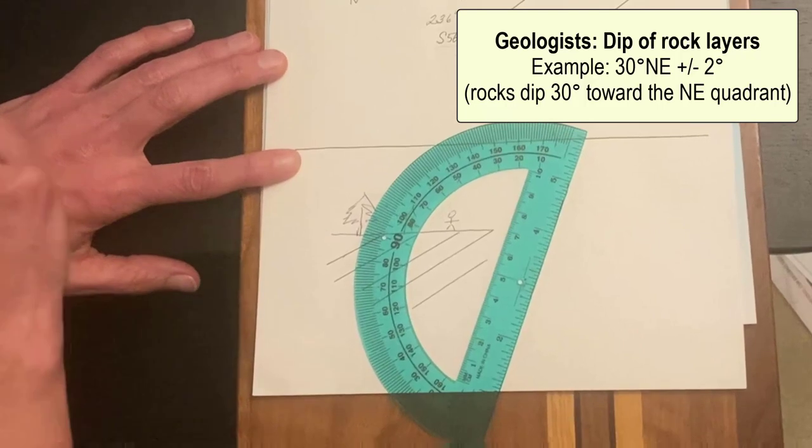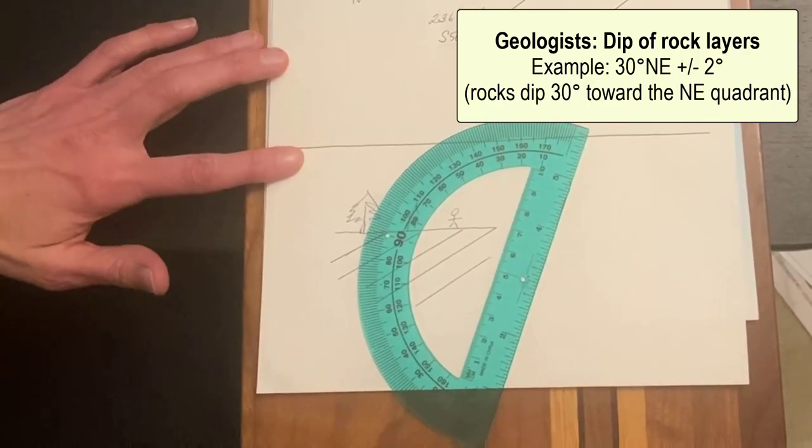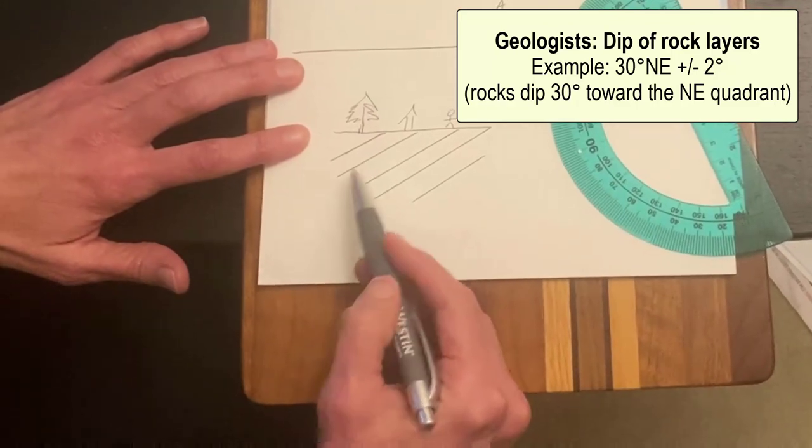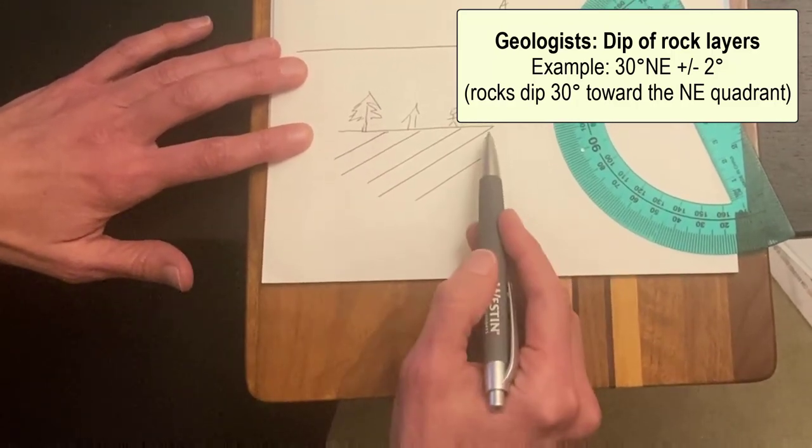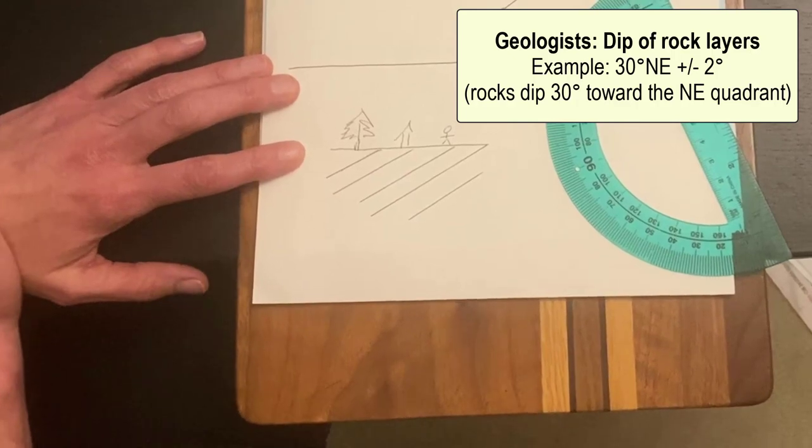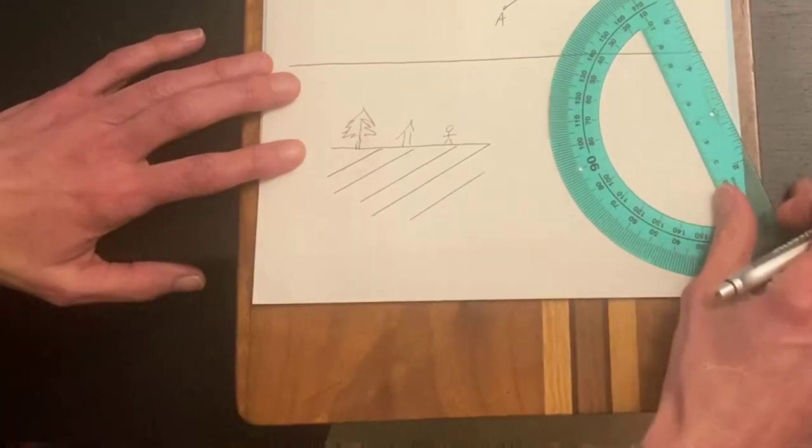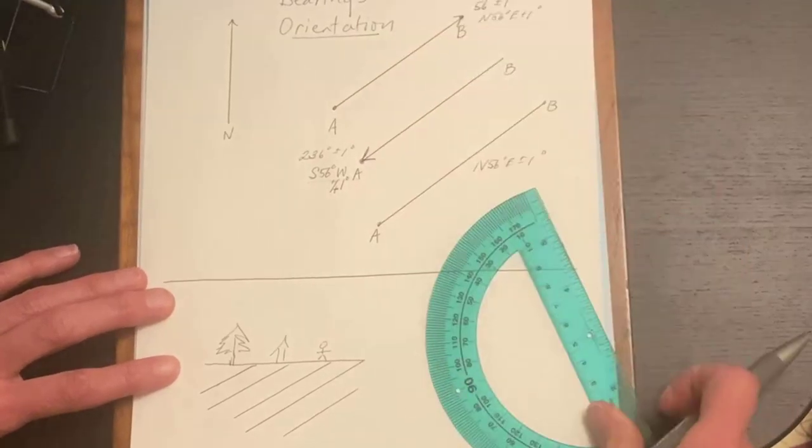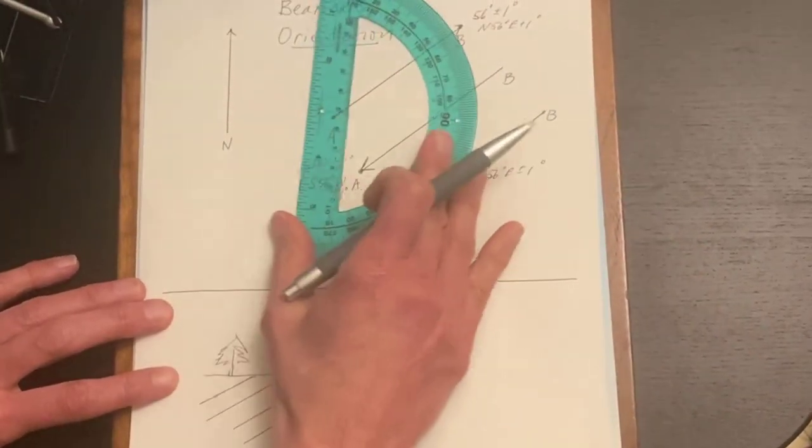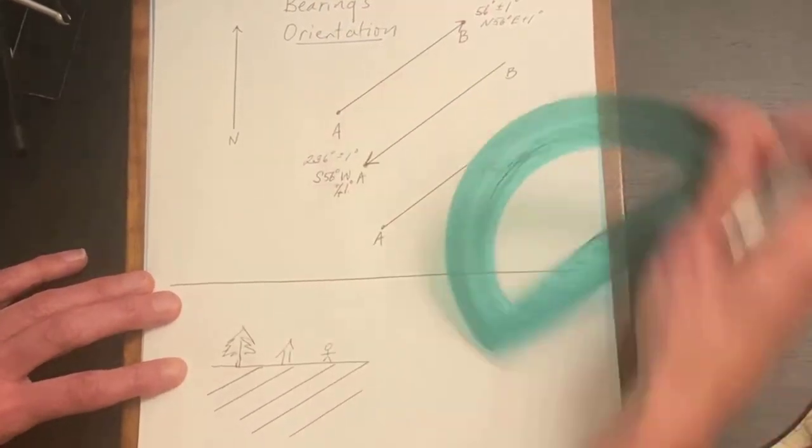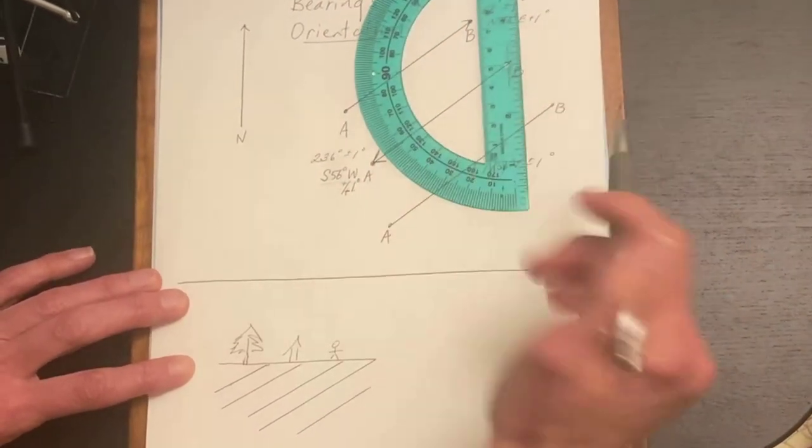In geology later you will talk about dip and in dip we're looking at how rocks tilt relative to a horizontal surface. This is where finding out what zero is supposed to be first is the way to ensure you use your protractor correctly. Remember up here zero was north so we started by having our zero be north. Here the zero was south so we started by having our zero point south. Here when we're dealing with how things dip under a horizontal zero is the horizontal.